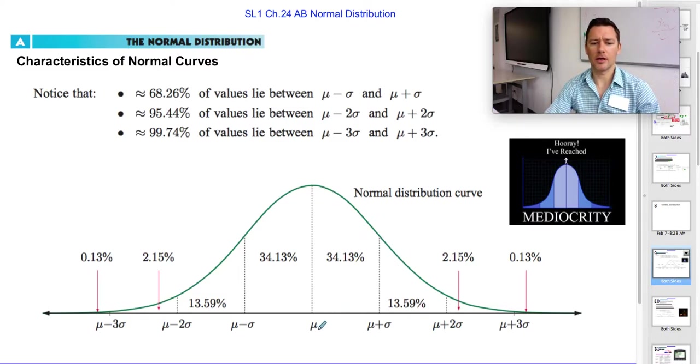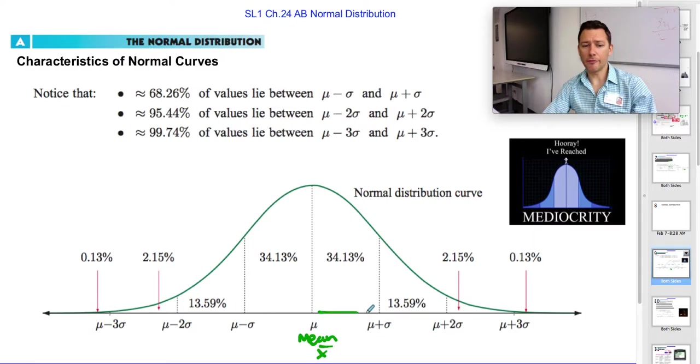And that's between, this is the mean, right? Between the mean and the first standard deviation, there's about 34 percent that should lie in there if the data is distributed normally.